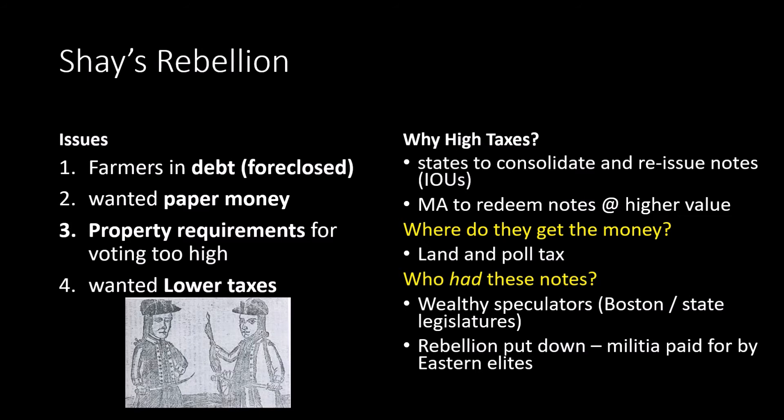The rebellion was put down by a militia paid for by the eastern elites, since the federal government had no armed forces to suppress a rebellion. The wealthy in Boston raised money among themselves and paid a militia to crush Shays' Rebellion. This fits a pattern — similar in spirit to Bacon's Rebellion, the Paxton Boys, and the Regulator Movement: western, frontier-type, lower-class people rising up against eastern elites. Now, during the Articles of Confederation period, it's a rebellion not against the British but against people in the eastern part of the state — and it's eventually crushed.